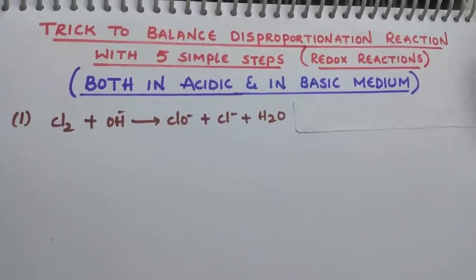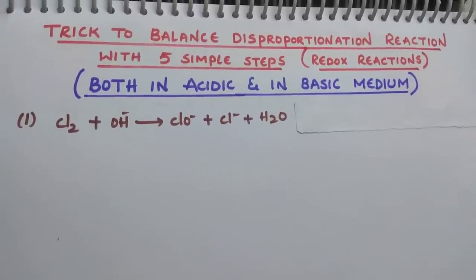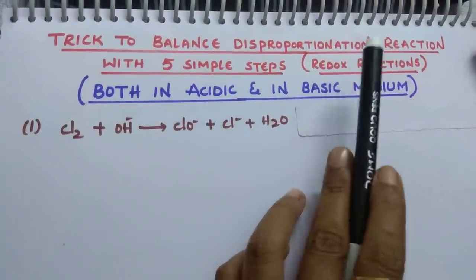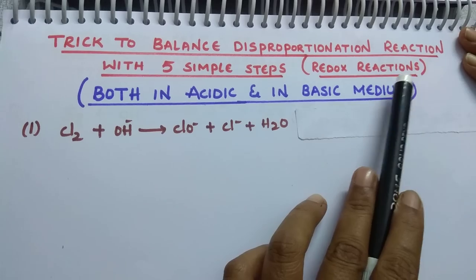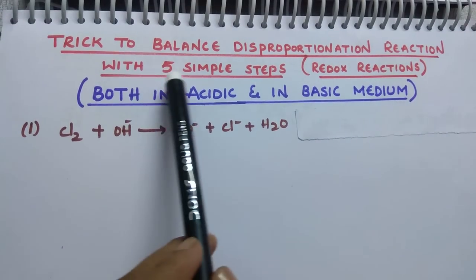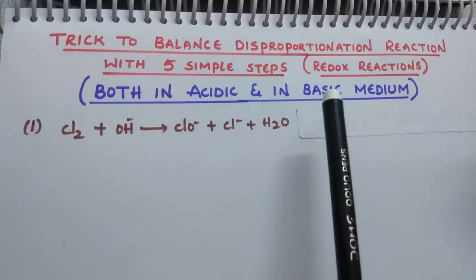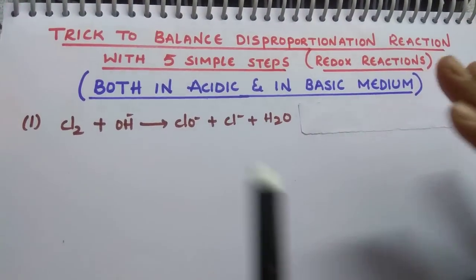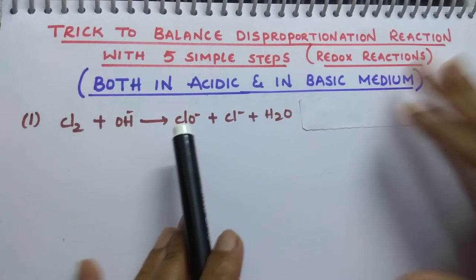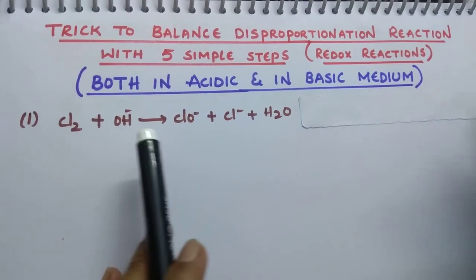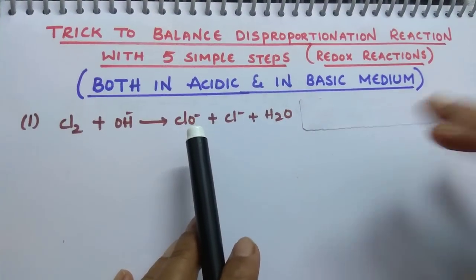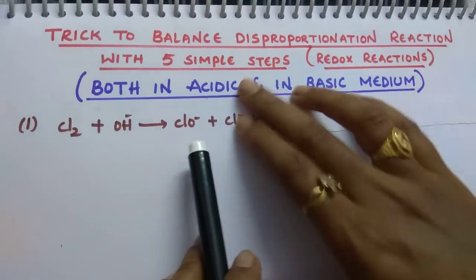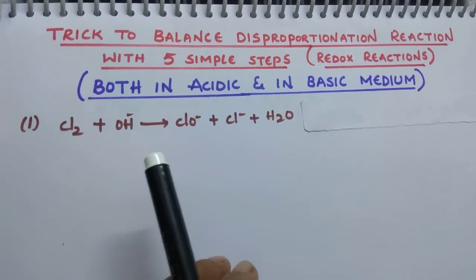Hi students, in today's session I am going to discuss a trick to balance disproportionation reactions with 5 simple steps. This topic is from the redox reactions chapter. I am going to discuss how you can balance both in acidic medium as well as in basic medium with these 5 simple steps.